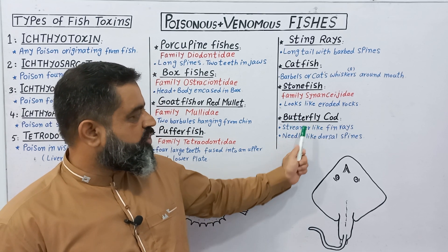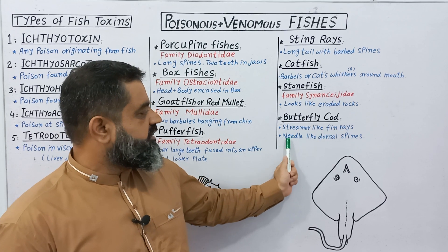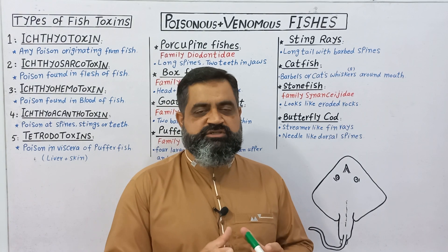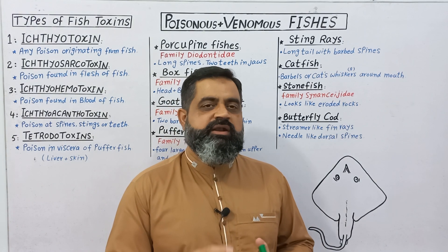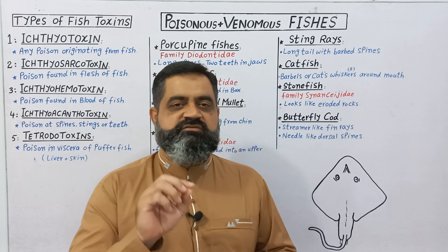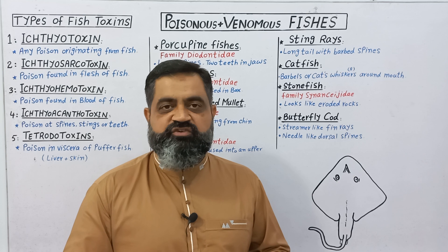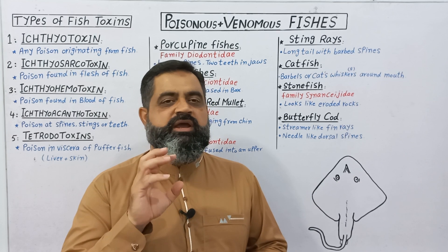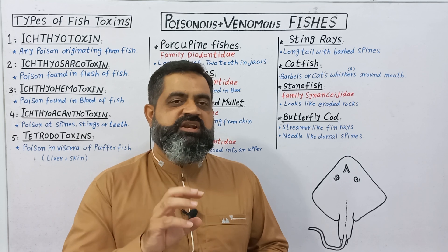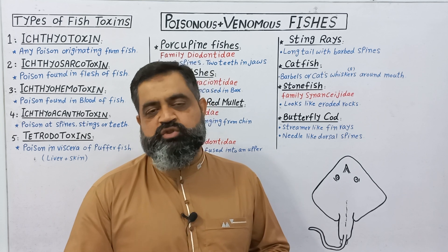The next example is butterfly cod, which has streamer-like fin rays and needle-like dorsal spines. This is a very colorful fish, just like a butterfly, and its body contains very fine spine-like fins which are associated with venomous glands. By encountering this fish, it can inflict venom inside another animal or human being, which can cause serious damage to the body.